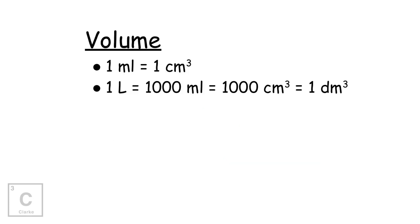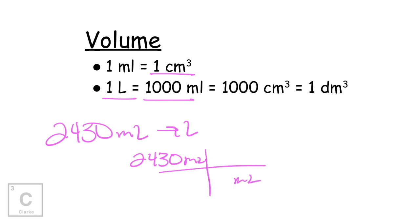Volume. Here are some very common units you might see for volume. One milliliter, that's the same thing as saying one cubic centimeter or one cc. One liter, that's equal to 1,000 milliliters or 1,000 centimeters cubed or one decimeter cubed. I would say the most common ones that we're going to see is liter, milliliter, and centimeter cubed. If we had 2,430 milliliters, how many liters would we have? 2,430 milliliters. Milliliters is on top. Milliliters goes on bottom. Liters goes on top. One liter is equal to 1,000 milliliters. That would give us 2.43 liters. To be honest with you, I don't even mind you just moving the decimal three places for this conversion.